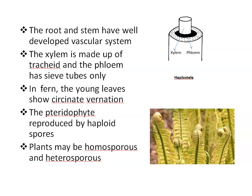Pteridophytes grow mostly in cool, moist and shady places, but some are aquatic — for example Marsilea, Azolla, Salvinia — and a few are xerophytic also, for example certain species of Selaginella.